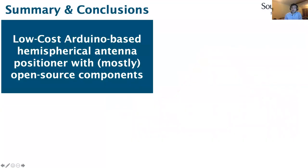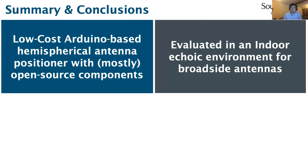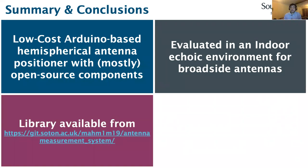To summarize: we are proposing a low-cost Arduino-based hemispherical antenna positioner relying mostly on open source components, with the potential to be converted to fully open source. The entire cost of the setup is less than 500 US dollars including the positioner and all cabling — not including the VNA or software license. We evaluated the system in an indoor echoic environment for two microstrip patch antennas, compared against time-domain simulations and anechoic chamber measurements. Our software library is available online on GitHub, including MATLAB code to automate the Rohde & Schwarz ZVB4 VNA, Arduino code for the positioner, and MATLAB scripts for plotting 3D radiation patterns.